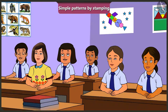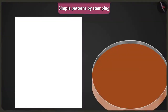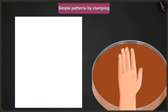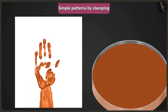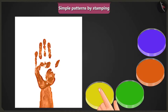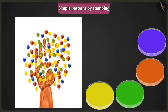Ma'am, how can I create a picture if I don't have anything to use as a block or a stamp? Jimmy, it is very easy. First of all, either soak your hand in colour or apply some colour on your hand, then stamp it on a paper. Now, dip one finger in the yellow colour and stamp it like this. Then dip the rest of your fingers in different colours and stamp them like this.